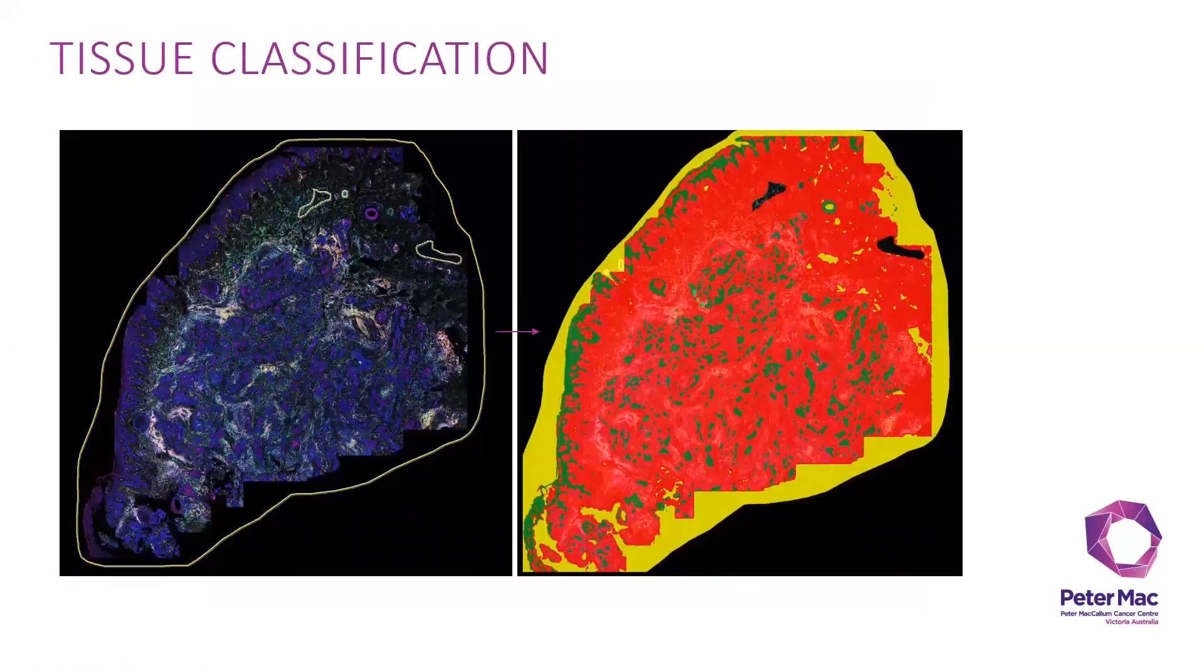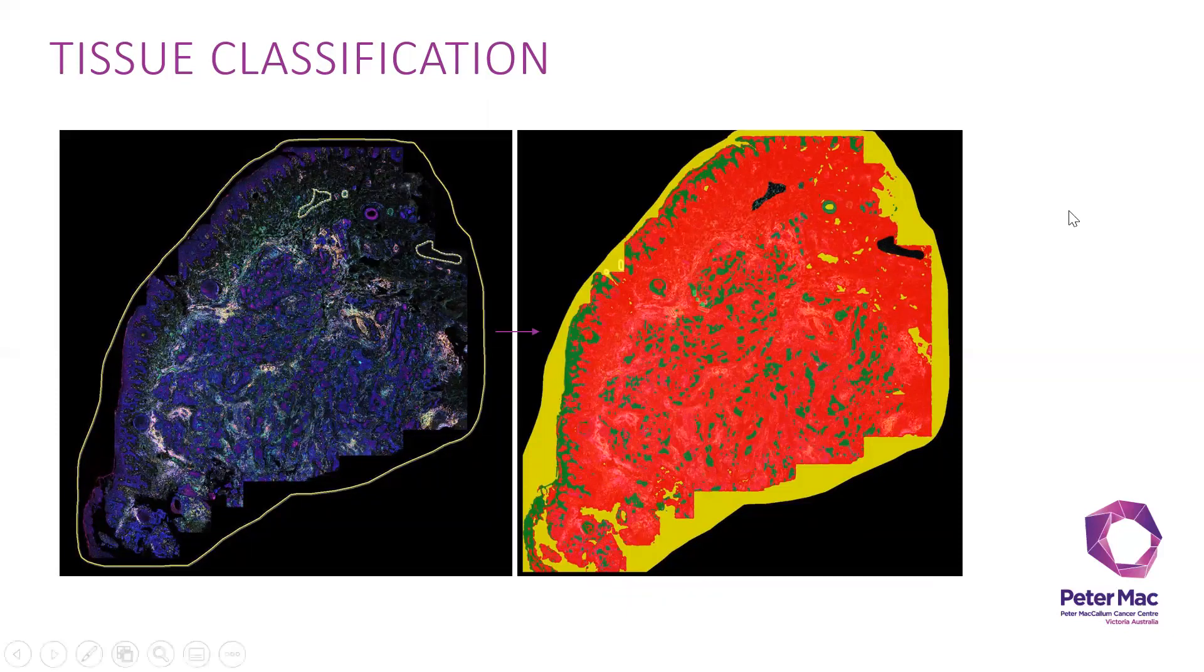In here, the left one is the manual annotation drawn around the tissue. Then I further classify it to three different classes here: tumor, stroma, and background.